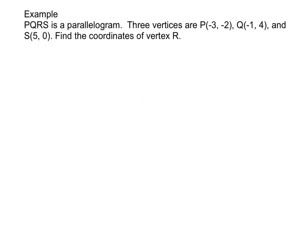Our next example says that PQRS is a parallelogram. Three vertices are P, which is at negative three, negative two, Q, which is at negative one, four, and S, which is at five comma zero. We want to find the coordinates of vertex R. So my first guess would be is that we must graph this in the coordinate plane.